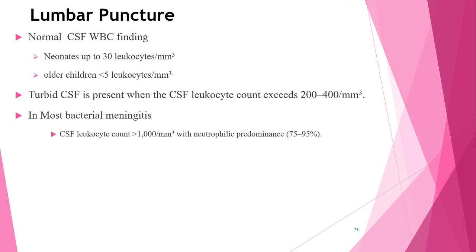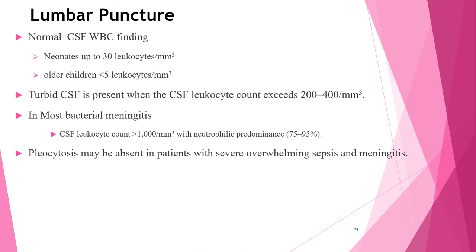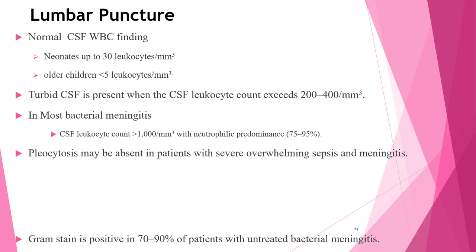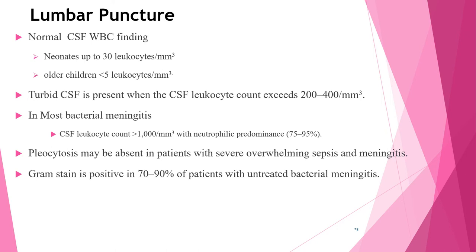In bacterial meningitis there is also increased protein and decreased glucose in the CSF. Pleocytosis may be absent in patients with severe overwhelming sepsis and meningitis — its absence is a poor prognostic factor. Gram stain is positive in 70–90% of patients with untreated bacterial meningitis. In children already receiving antibiotic therapy, CSF obtained by lumbar puncture may be negative on Gram stain and culture as early as four hours after antibiotic administration.